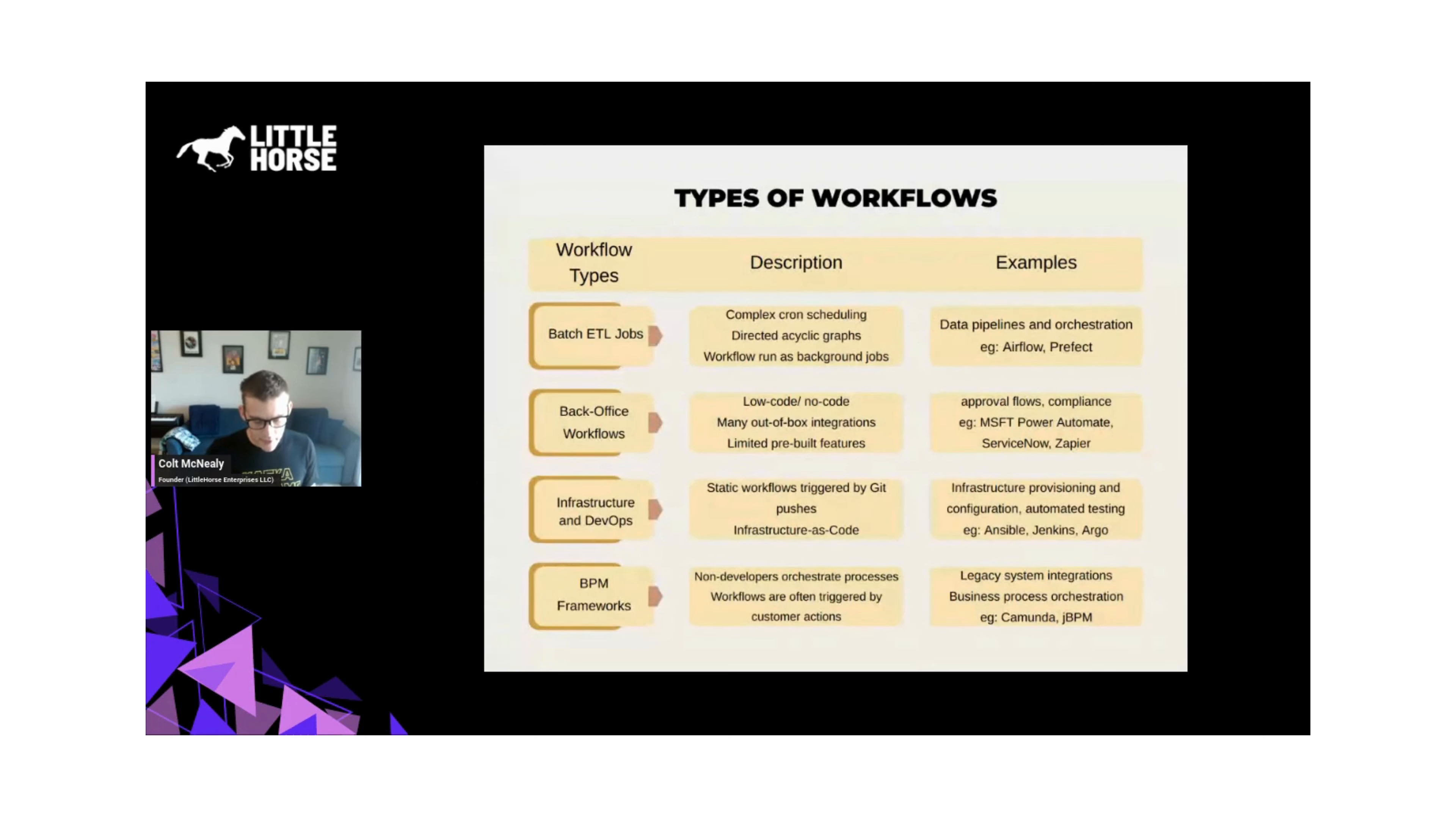And they can be used to do legacy systems integration and some business process orchestration, including customer-facing business process orchestration. But the problem with these frameworks, such as Camunda and JBPM, Red Hat Process Automation Manager, is that they're heavyweight, kind of hard to learn, and not really flexible.